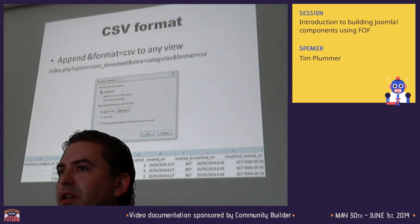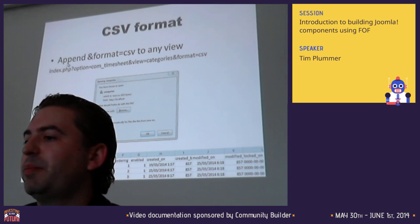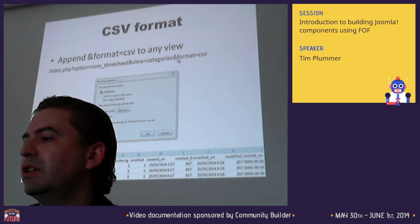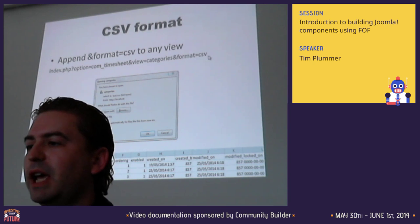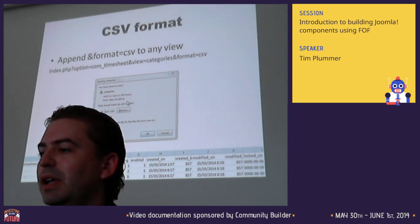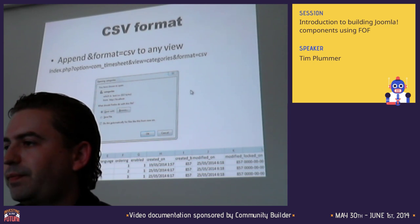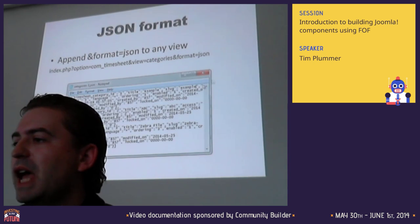Here's a quick example of exporting a view to a CSV file. You take the normal view URL and append 'format=csv' to the end - hit enter and it comes up with the CSV file to save. Same with JSON format - just add 'format=json' to the view URL and it outputs in JSON format.